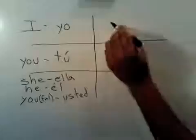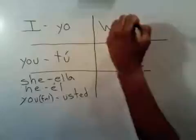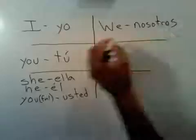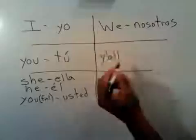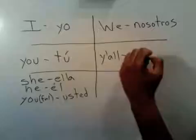In box number four, we is nosotros in Spanish. And then y'all, which is short for you all — that's why we have the apostrophe there, taking the place of O-U. So you all, informal of course, and the word for that is vosotros. That's box number five.